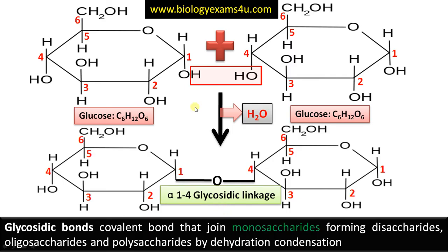It is called alpha because the OH group of the first monosaccharide — that is, the first carbon — is below the plane of the glucose ring. This is maltose. Glucose plus glucose forms the disaccharide maltose by the alpha 1,4 glycosidic linkage.